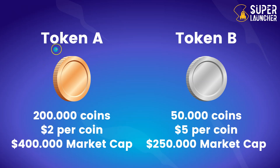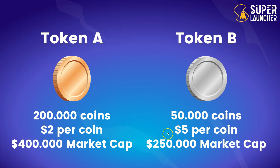For Token A, the market cap is $400,000. Now look at Token B, which has 50,000 coins and a price of five dollars per coin. 50,000 times five equals $250,000, so the market cap for Token B is $250,000. Note that although the price of Token B is higher than the price of Token A, the market cap of Token B is lower than the market cap of Token A.